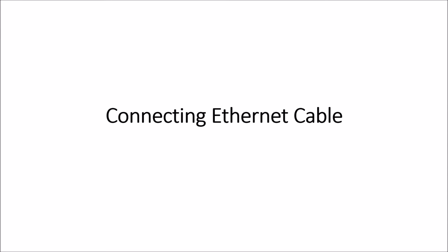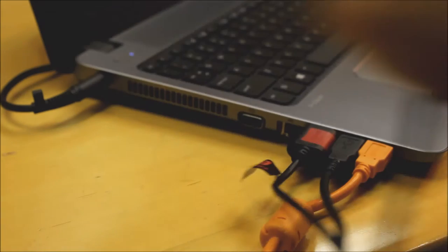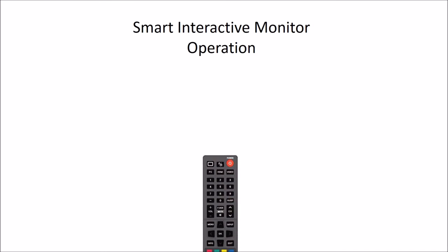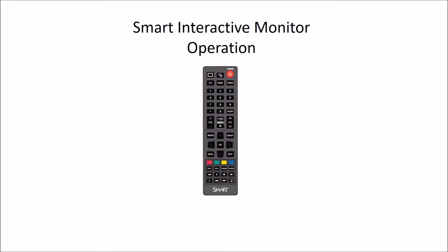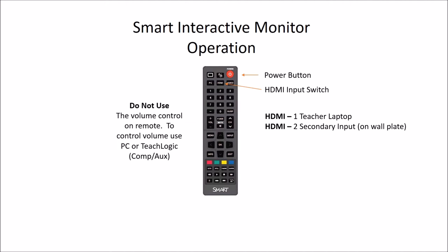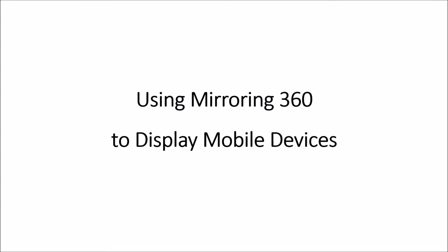To make a wired connection to your school's network, use the supplied green ethernet cable and plug in next to the HDMI port. To turn your display on and off, use the red power button located in the top right corner. To switch between your HDMI sources, simply hit the HDMI button in the middle. Note: do not use the volume control on your remote or on your mobile device.